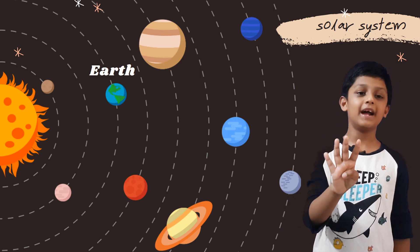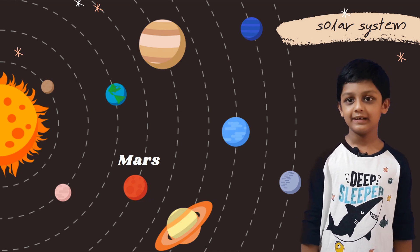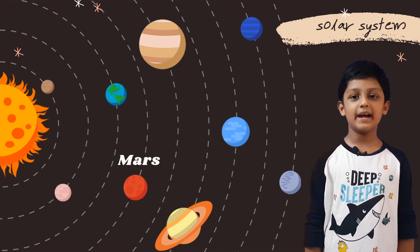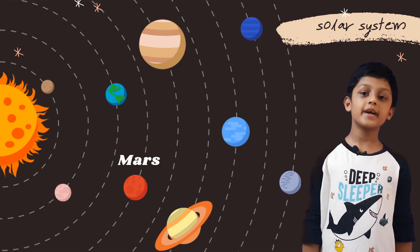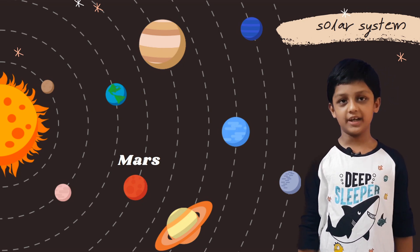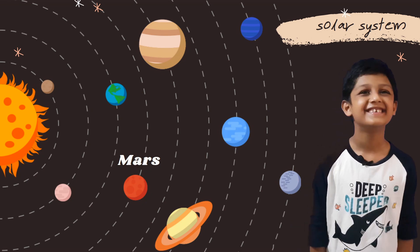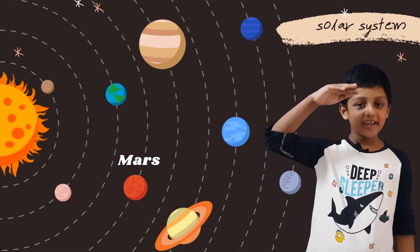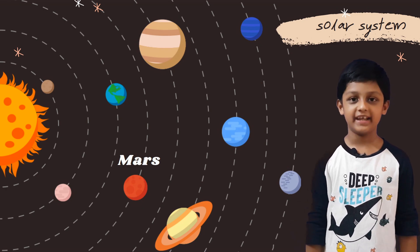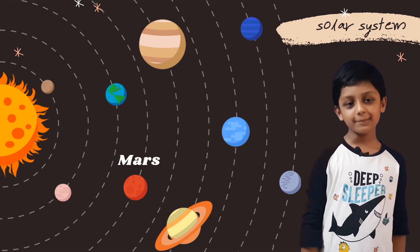The fourth planet is called Mars. Mars colors are in red and it has many huge volcanoes on it. And it has two moons. And they land rovers to study and learn about Mars.